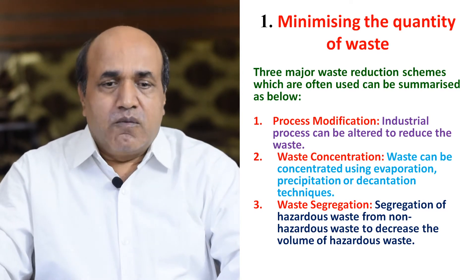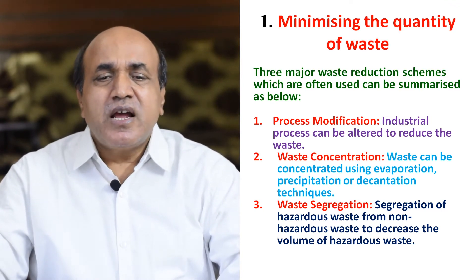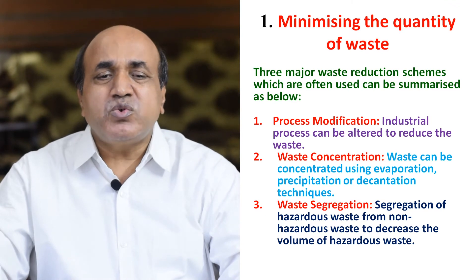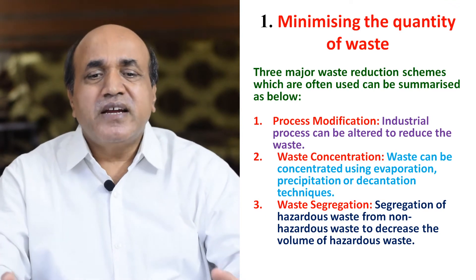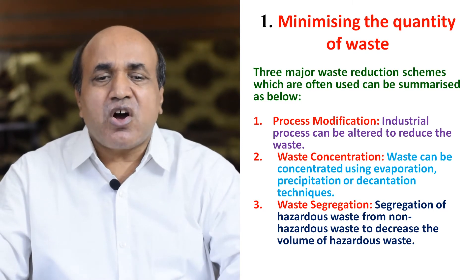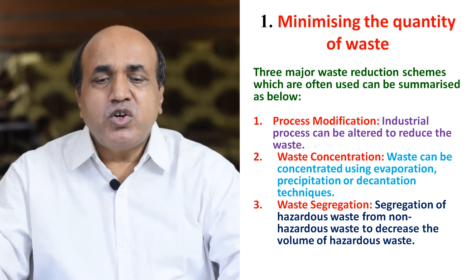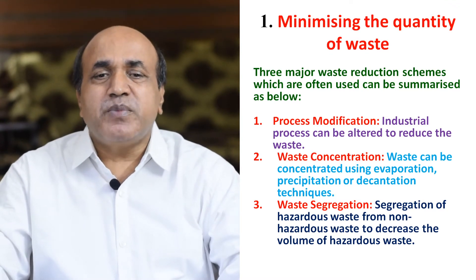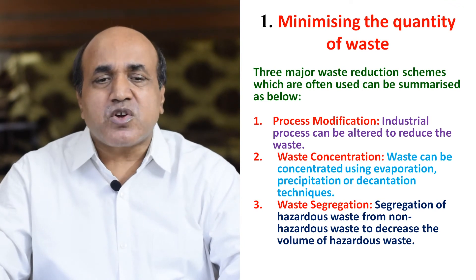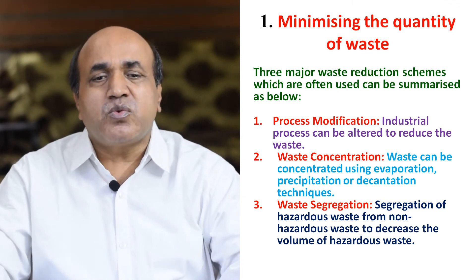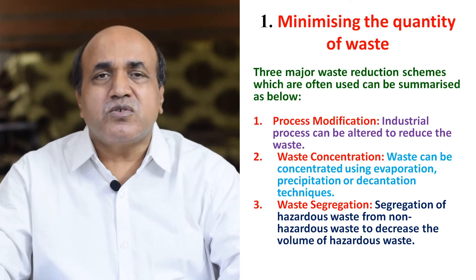To minimize waste, three processes are used: first, waste modification — altering the industrial process; second, waste concentration — using evaporation, precipitation, or decantation techniques to increase concentration; and third, waste segregation — separating hazardous waste from non-hazardous waste to decrease the volume of hazardous waste.